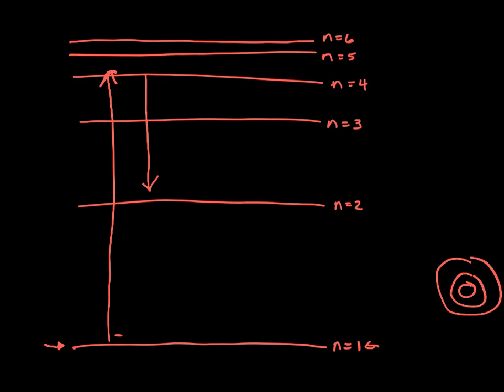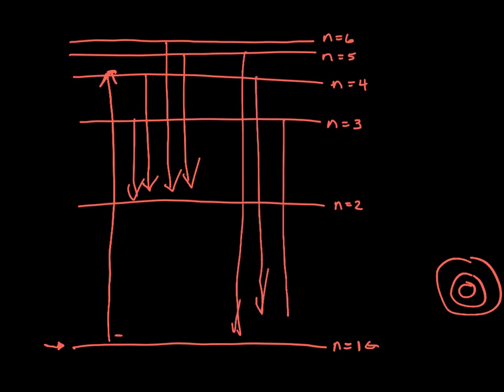So there's a huge number of possible transitions that could happen here. They can fall from, say, n equal to 6 to 2, 5 to 2, 4 to 2, 3 to 2, 5 to 1, 4 to 1, 3 to 1, 6 to 5, 5 to 4, any number of possible transitions. But they have to be on energy levels.